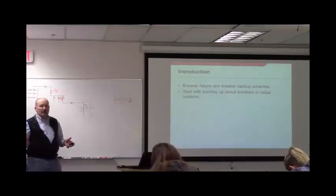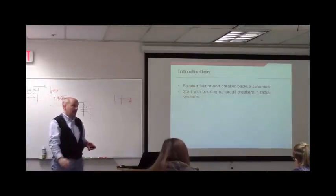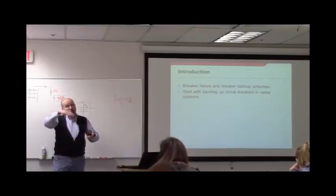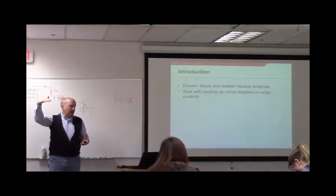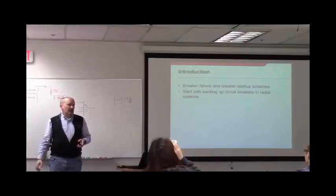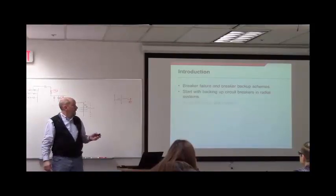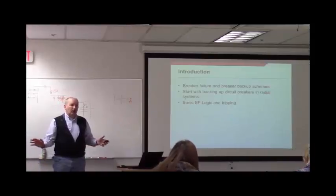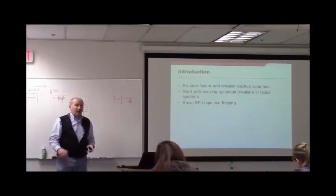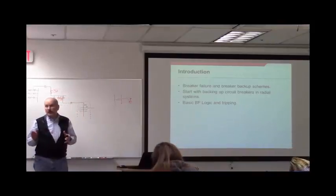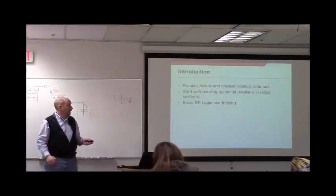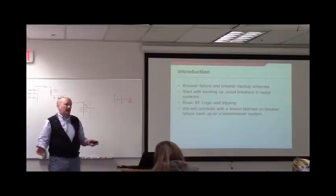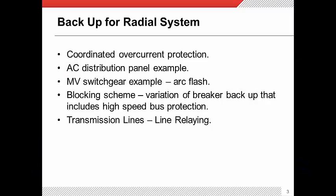We're going to start by looking at how you back up circuit breakers in a simple radial scheme — something like an AC panel in your house or the station service system within a substation. We'll then go up in voltage to the distribution level, then up to transmission voltage. At each level I'm going to introduce the basic breaker failure logic. If you only remember one thing out of this class, I want it to be that basic breaker failure logic.